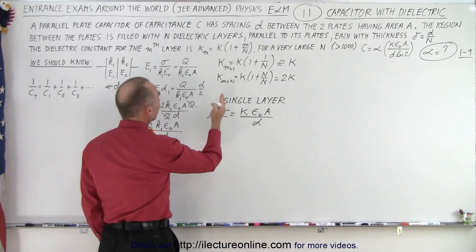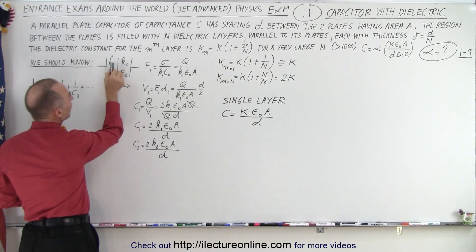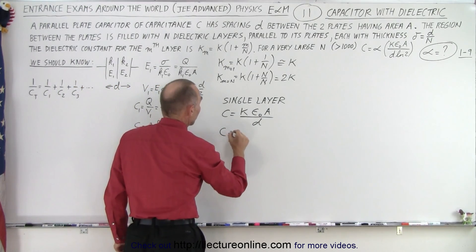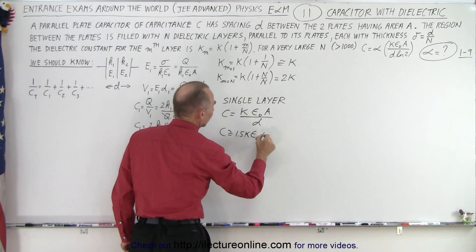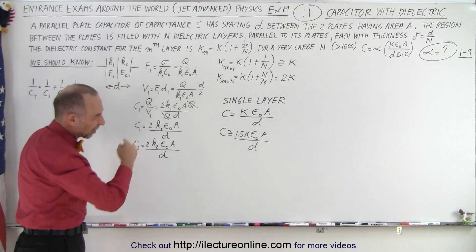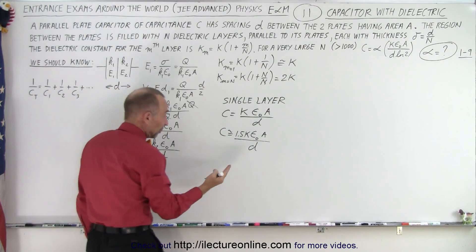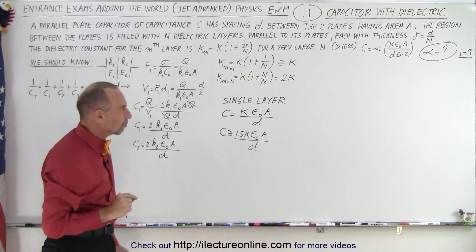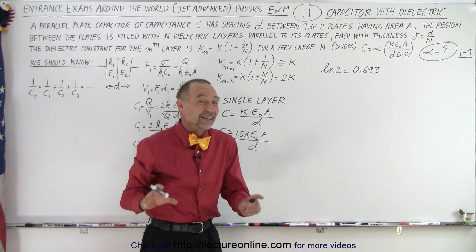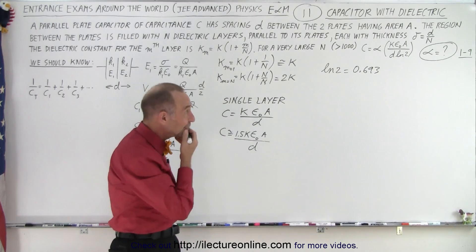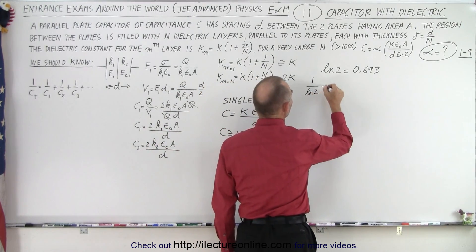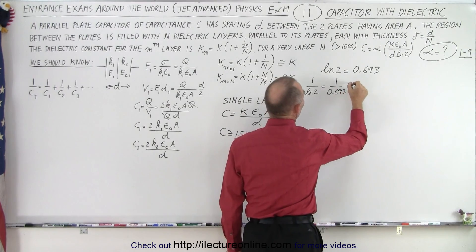If the average dielectric constant is 1.5K, then C ≈ 1.5·K·epsilon_0·A/D. Now, the natural log of 2 equals 0.693. So 1 over the natural log of 2 equals 1 over 0.693, which is approximately equal to 1.5.